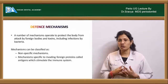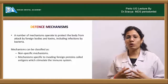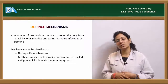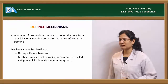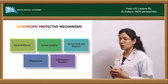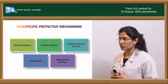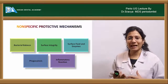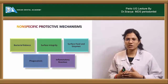The specific mechanisms include those with memory — that is, a specific antibody response in the form of humoral immunity or cell-mediated immunity. The non-specific mechanisms include: bacterial balance, the surface integrity of the tissues, surface fluid and enzymes, the potential of phagocytosis, and the inflammatory reaction.